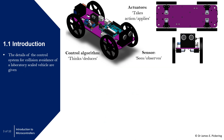Looking at the details of the lab-scaled vehicle for the control system, it consists of three main components. The sensor at the front is an ultrasonic distance measuring sensor. The actuators are four DC motors located underneath the car, which create longitudinal displacement to move the vehicle forward. Finally, we have the control algorithm that effectively enables the system to think and take action.